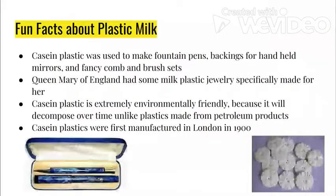Some fun facts about milk plastic: casein plastic was used to make fountain pens, backings for handheld mirrors, and fancy comb and brush sets. Queen Mary of England actually had some milk plastic jewelry made for her way back in the 1900s. Casein plastic is extremely environmentally friendly because it can decompose over time, unlike many plastics today which are based on petroleum. Casein plastics were first manufactured in London in 1900.